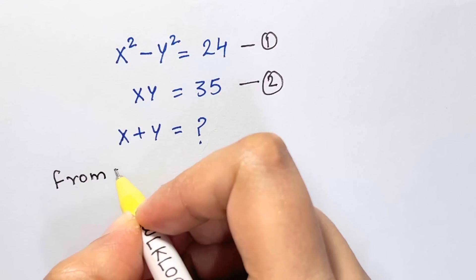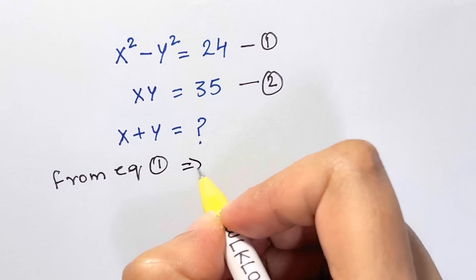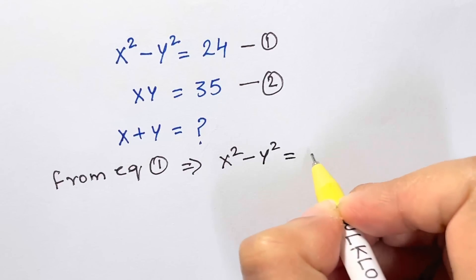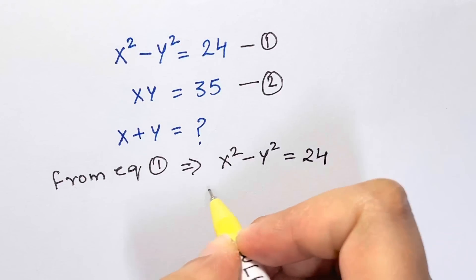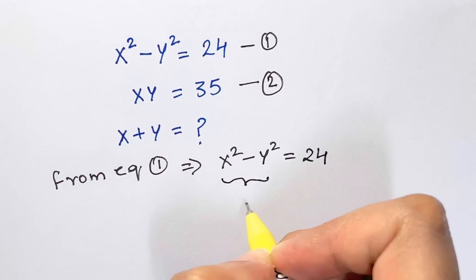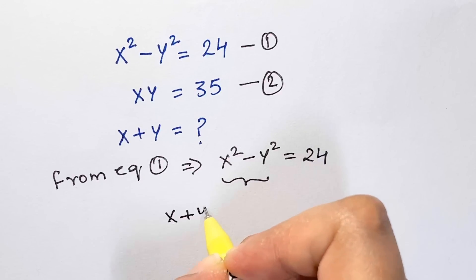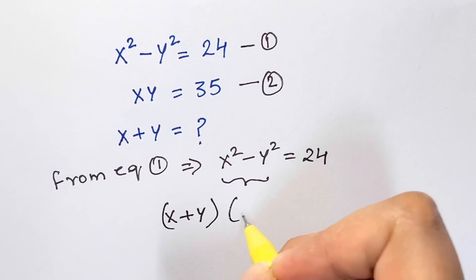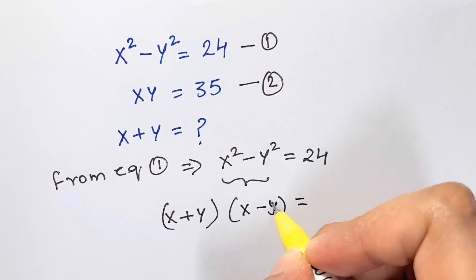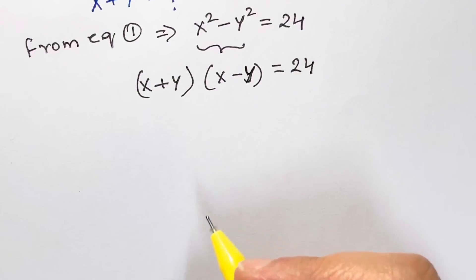From equation 1, x² - y² = 24. I can expand this using the formula (a+b)(a-b), so that gives us (x+y)(x-y) = 24.